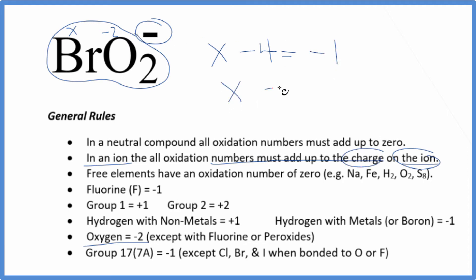Add four to both sides, X equals a positive three. So the oxidation number on the bromine in BrO2 minus is going to be a positive three. You may be able to figure that out just looking at it and using these rules.